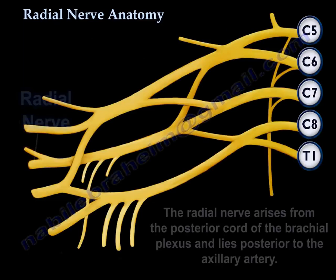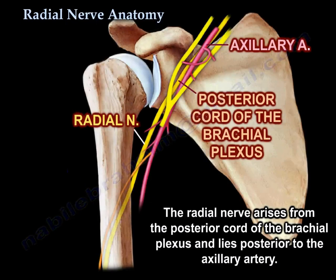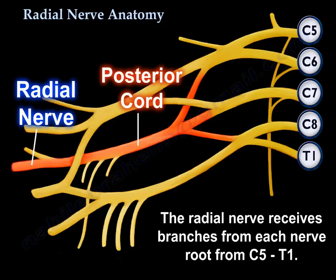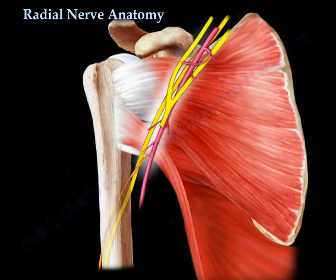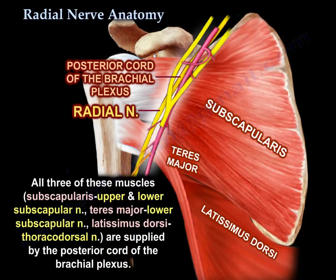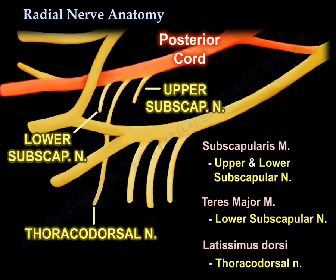The radial nerve arises from the posterior cord of the brachial plexus, lying posterior to the axillary artery. It receives branches from each nerve root from C5 to T1. The radial nerve courses on the posterior wall of the axilla, lying on top of the subscapularis, the teres major, and the latissimus dorsi muscle — all three muscles supplied by the posterior cord of the brachial plexus, as shown in this diagram of the posterior cord branches.